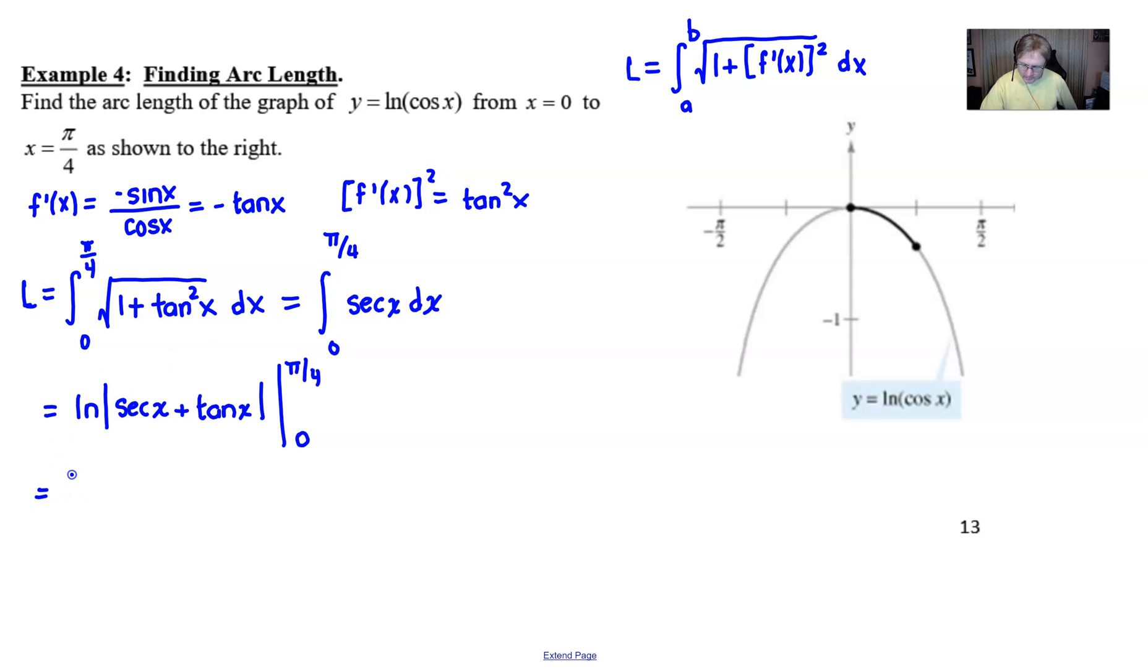So we are now at a point where we are going to plug in our pi over 4. And if you have a hard time sometimes evaluating secant, I get it. It's okay. Just think of secant as 1 over cosine, and you could evaluate it that way. And tangent is not nearly as bad. And then we'll subtract and we'll do the same thing, rewriting the secant as 1 over cosine as we plug in our 0. So it looks like we're all set for this. Let's go ahead and evaluate this.